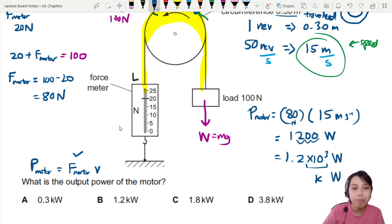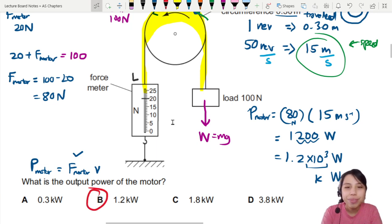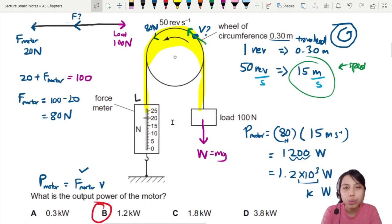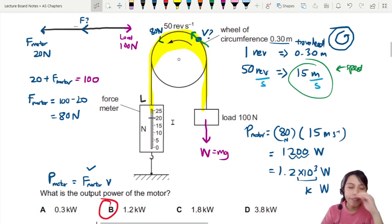The best choice is B for this question. Make sure you know how to use P equals FV. If you're wondering where P equals FV comes from, you can derive it from other forms of the power equation—check out the theory videos. If you have a different method to solve this question, please share and comment below. That's all, see you in the next one.